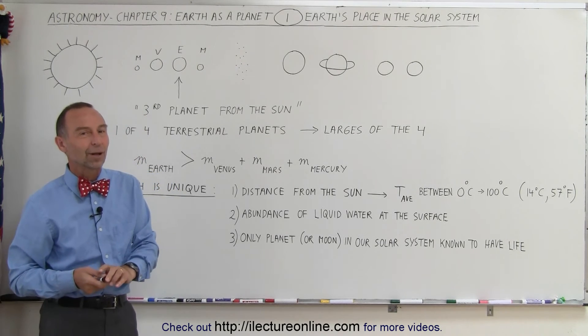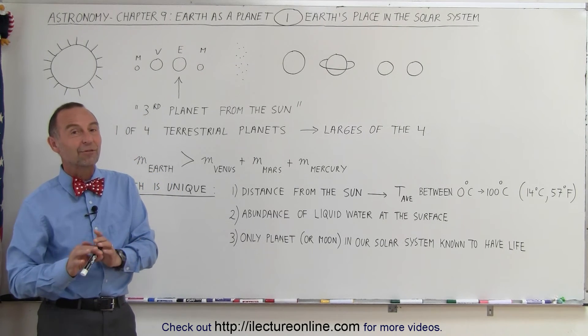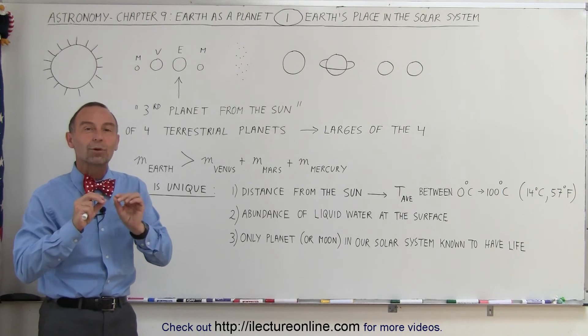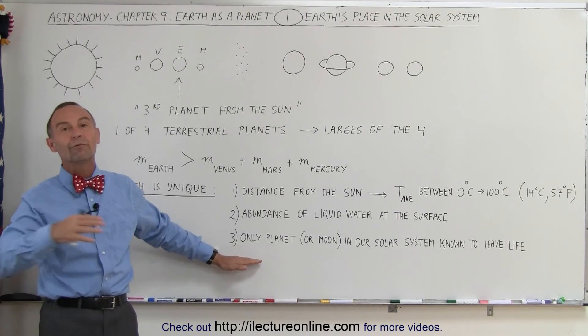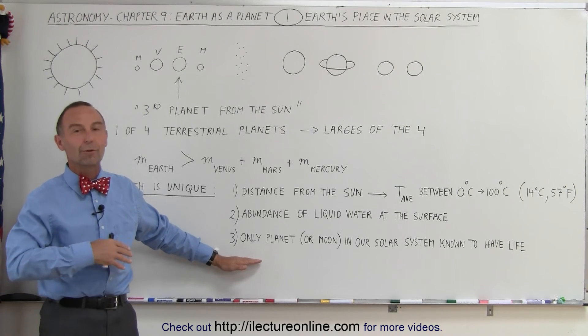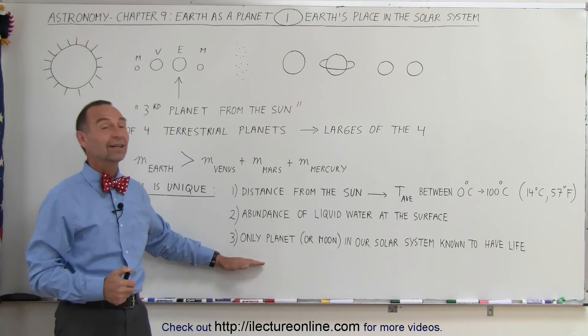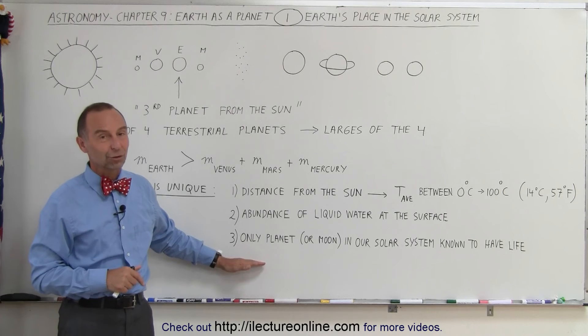You never know, there may be life as well. But if there is, it's probably very scarce, very microbial type of life. The Earth has abundant life on it and all various life forms, over a million different species. Again, extremely unique in our solar system.